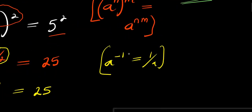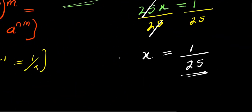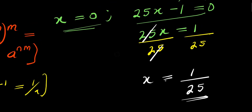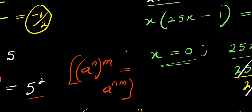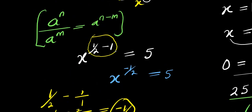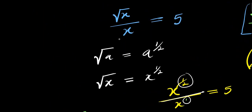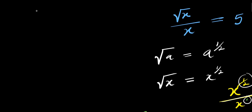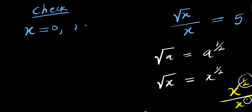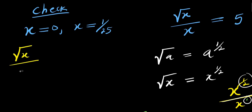In this second method we are getting x equals 1/25, while in the first method we had x equals 0 and x equals 1/25. The next thing we are going to do is check each of these solutions by plugging them into the original equation: square root of x divided by x equals 5.